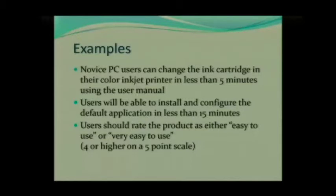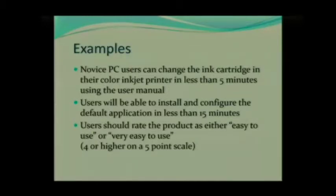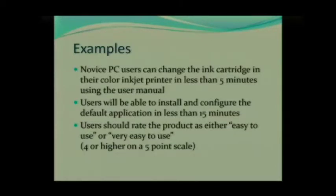Here are some examples showing the detail you want in your tasks. First: 'Novice PC users can change the ink cartridge in their color inkjet printer in less than five minutes using the user manual.' You can identify the type of user — novice PC user — the task — change the ink cartridge in a color inkjet printer — and the performance criteria — less than five minutes, using the manual. This makes it very clear what you're looking at, with explicit performance criteria.